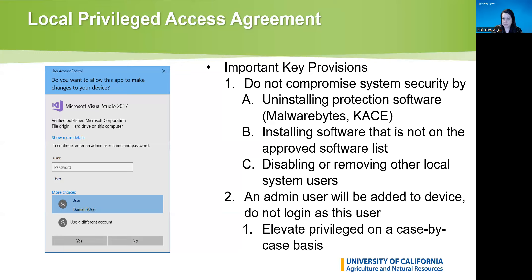For example, if I log into my device under my standard user — jwojin — Help Desk has set up a second user called jwojin_admin. When I need to install something, I'll get a User Account Control pop-up asking me for an admin username and password. I'll put in the jwojin_admin username and the password that goes with that account to install. You don't ever want to log in as your local admin user for routine tasks, because that's when you're at risk for accidentally installing something you didn't mean to by clicking a link or having a web page download something in the background.